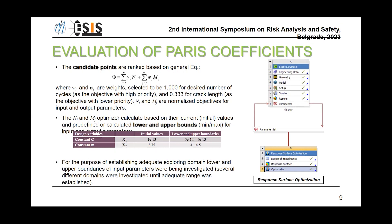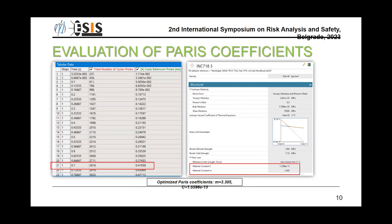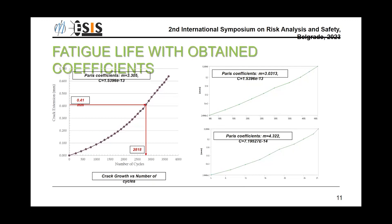After that, we used initial input results at 2,800 cycles and 0.4 millimeter crack extension, and for those results we got the optimized Paris coefficients. We used those results for estimating the residual life of the HPT case assembly. As you can see on the left diagram, we show how the number of cycles changes with crack extension in millimeters. This was really important because the workshop needed to find the maximum number of working cycles for its high pressure turbine.